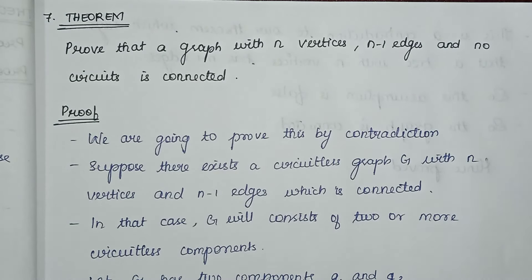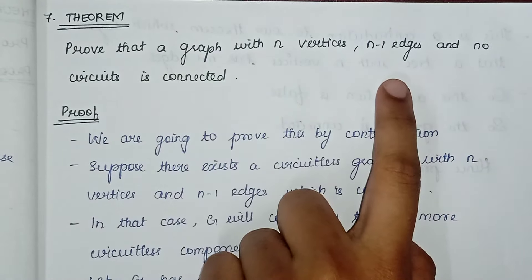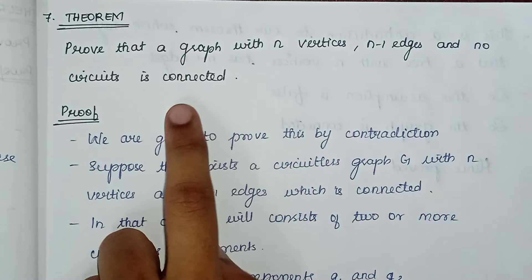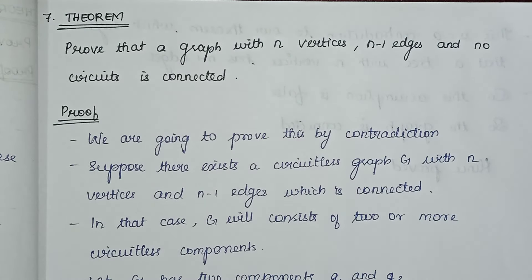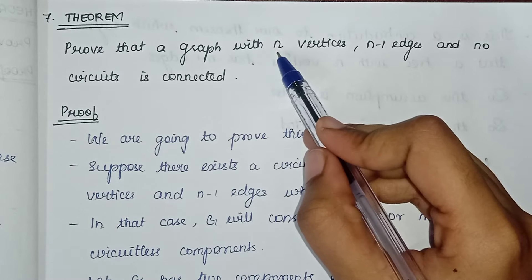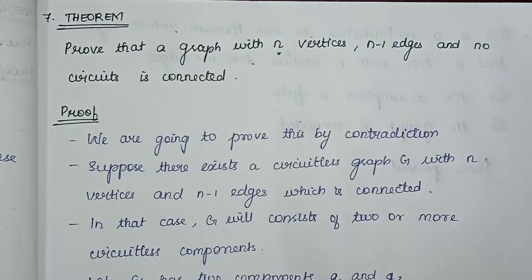Hello all, we have to talk about the theorem. Prove that a graph with n vertices, n-1 edges and no circuits is connected. So, a graph which is having n vertices, n-1 edges and no circuits — what you can say? That graph is connected. We will have a graph which is having n vertices, n-1 edges and no circuits is connected.